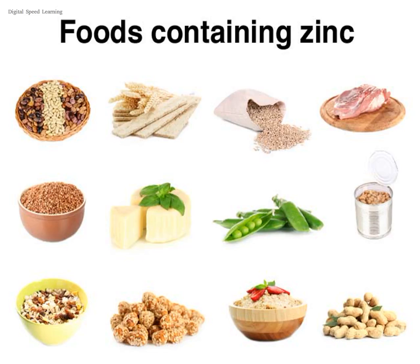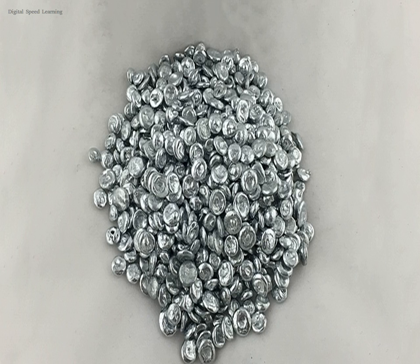Zinc metal was not produced on a large scale until the 12th century in India and was unknown to Europe until the end of the 16th century. The mines of Rajasthan have given definite evidence of zinc production going back to the 6th century BC. The oldest evidence of pure zinc comes from Zawar, in Rajasthan, as early as the 9th century AD, when a distillation process was employed to make pure zinc.